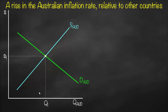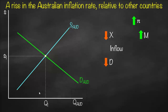Our last example is a rise in the Australian inflation rate relative to other countries. If the inflation rate in Australia is higher compared to neighboring countries, our prices will be higher, making domestic goods relatively more expensive. As a result, our exports will decrease. Foreign goods will be relatively cheaper, so our imports will be higher. Remember: exports are inflow, so lower exports means lower inflow, which means lower demand — the demand curve shifts to the left. Imports are outflow, so higher imports means higher outflow — the supply curve is affected.